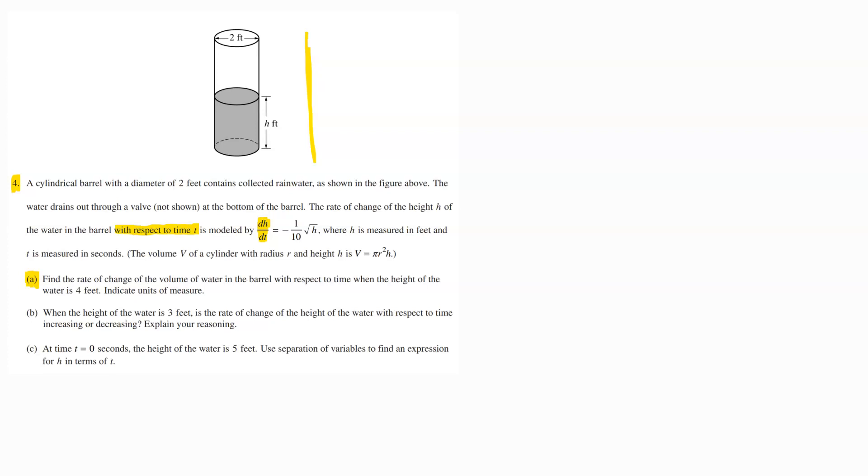So whenever I'm doing a related rates problem, I start trying to grab off what I know. First and foremost, they want me to find the rate of change of volume with respect to time. So the thing I'm looking for in this problem is dV/dt. Then I come back to the language of the problem, and I'm being told that I've got the rate of change of the height of this water barrel with respect to time. It's given by this equation here. So I know then that dH/dt is equal to negative 1 over 10 square root of H.